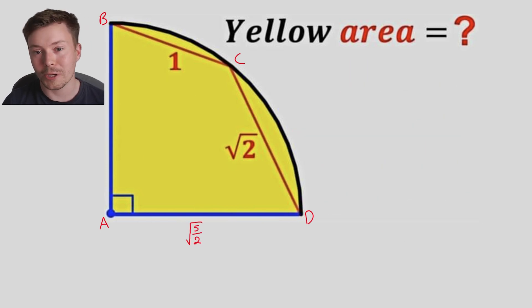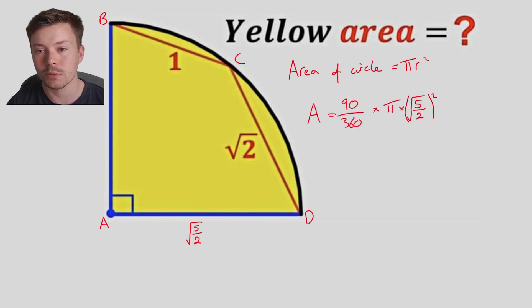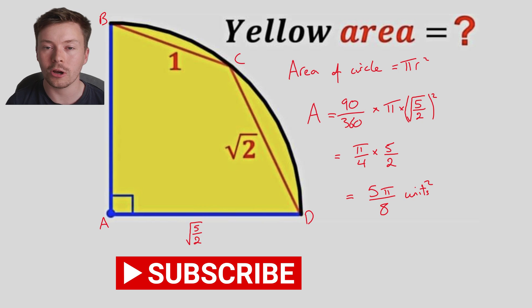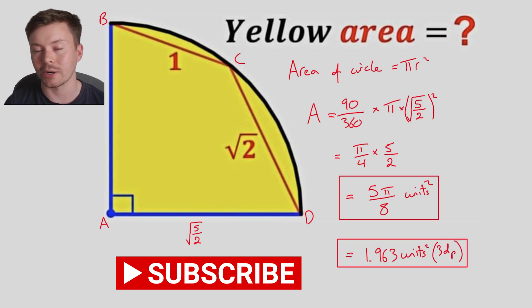Okay, so we've got this and now we can work out the yellow area because it's a quarter of a circle and we've got the radius. So the area of a circle is pi r squared. So we are going to do a quarter of a circle, which I'm going to write as 90 over 360 times pi times by radius, which is root 5 over 2, all squared. Simplifying that, we are going to get pi over 4, 90 over 360 will simplify to a quarter times pi, and then root 5 over 2 squared is just 5 over 2. Multiplying those two things together, and our final answer is 5 pi over 8 units squared, and if you want it as a decimal, 1.963 units squared to three decimal places.